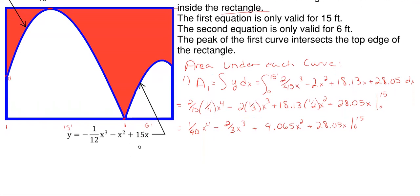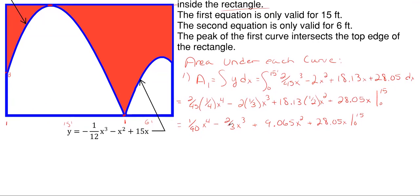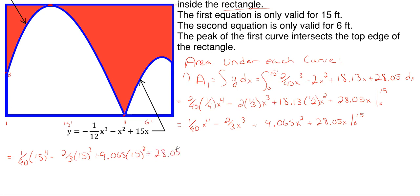Now we plug in 15 for each x. We don't need the zero bound because every term includes an x, so it all evaluates to zero. This gives us: 1/90 times 15 to the fourth, minus 2/3 times 15 to the third, plus 9.065 times 15 squared, plus 28.05 times 15. This rounds out to approximately 772.875 square feet — that's how much area is underneath the first curve in white.